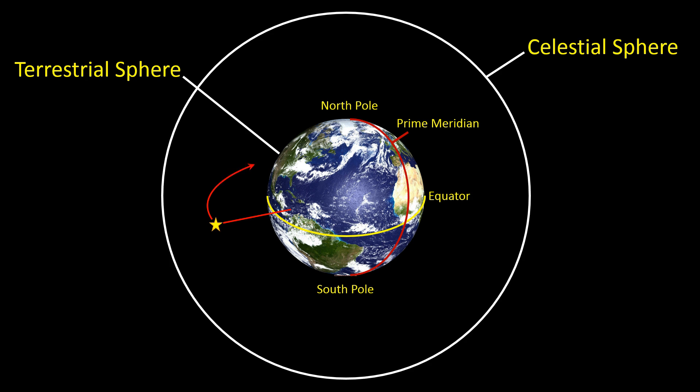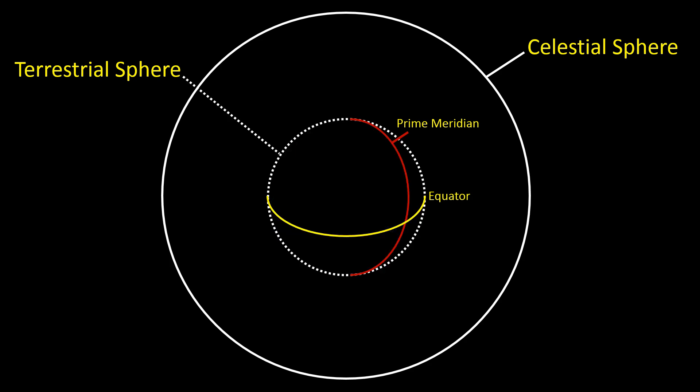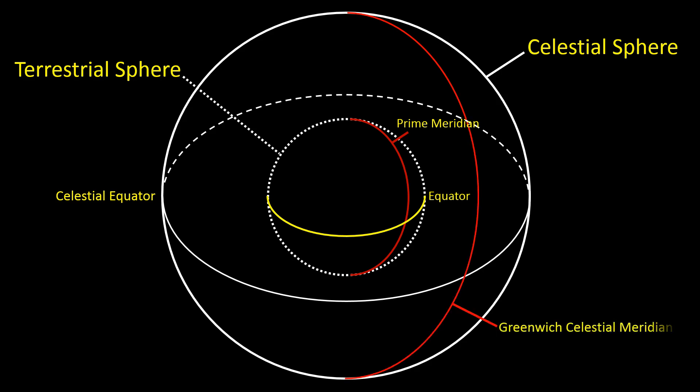In navigation, the celestial coordinate system uses Greenwich hour angle and declination to describe these positions in the celestial sphere. There is a celestial equator which maps to the equator of the Earth. There is also a Greenwich celestial meridian which maps to the terrestrial prime meridian.